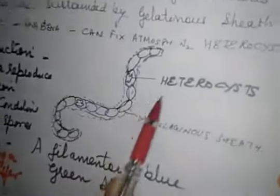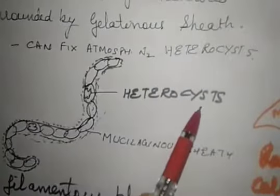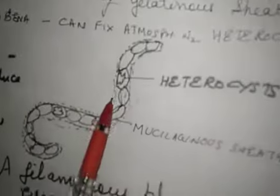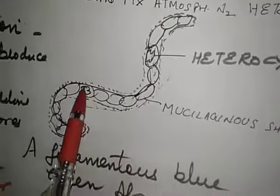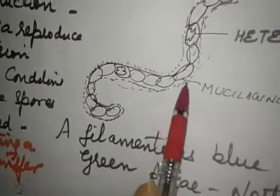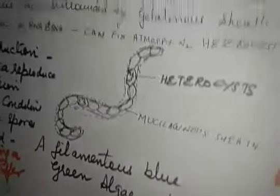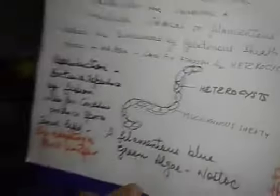One example of blue-green algae is Nostoc. This is a diagram of Nostoc. In Nostoc, special cells which fix nitrogen are called heterocysts. Nostoc is covered by an outermost gelatinous sheet called the mucilaginous sheet. They may be chemosynthetic or they may be photosynthetic.